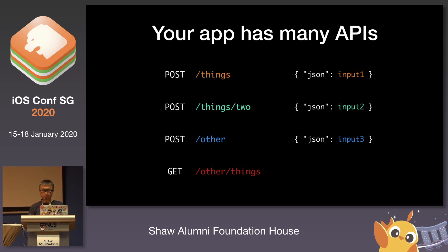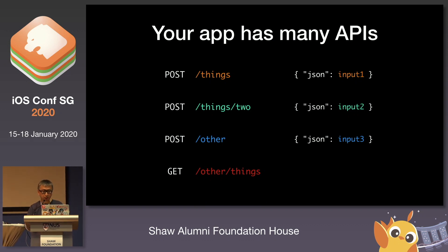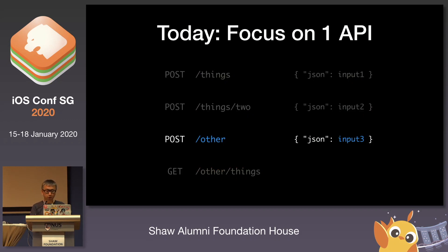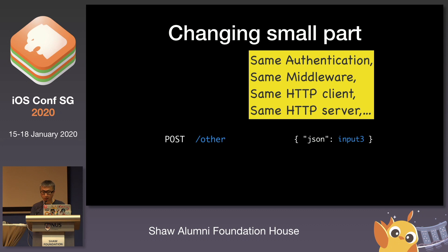Our apps have a lot of APIs. Your app is very busy — you have a lot of features, earning a lot of money. But today we are just going to talk about one of the APIs that you have. One API, which also means the same authentication, same middleware, same client, same server, same everything. We're just going to edit one of your APIs.